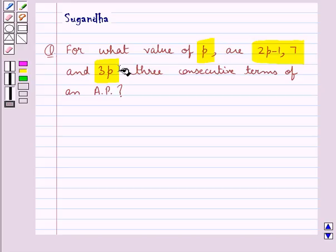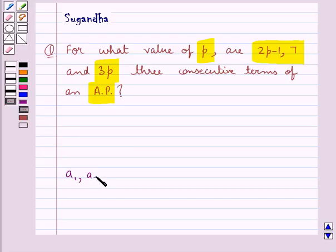three consecutive terms of an AP. We know that a given list of numbers say A1, A2, A3 and so on is an AP if AK plus 1 minus AK is same for different values of K.